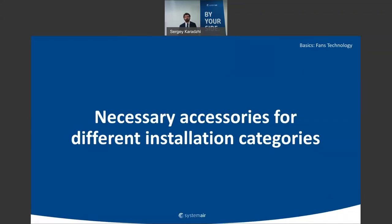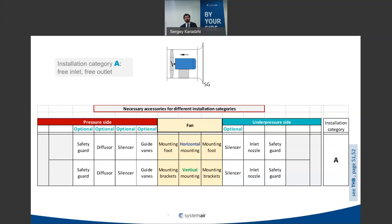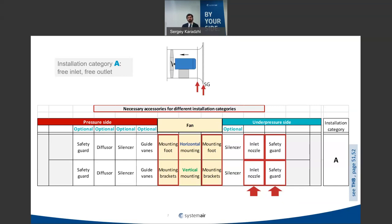Regarding necessary accessories for different installation categories: for free inlet, free outlet (Category A), you need an inlet nozzle and safeguard for safety reasons, mounting feet with dampers to isolate fan vibrations from the base, and ideally a diffuser on the outlet to recover dynamic pressure. Silencers and safeguards on the outlet are optional depending on sound level requirements.